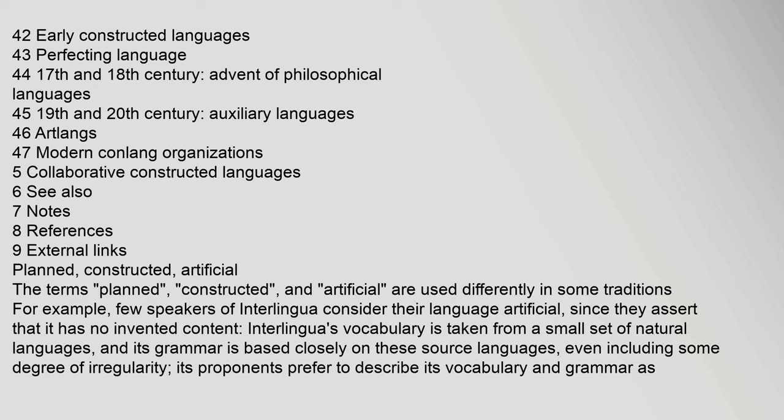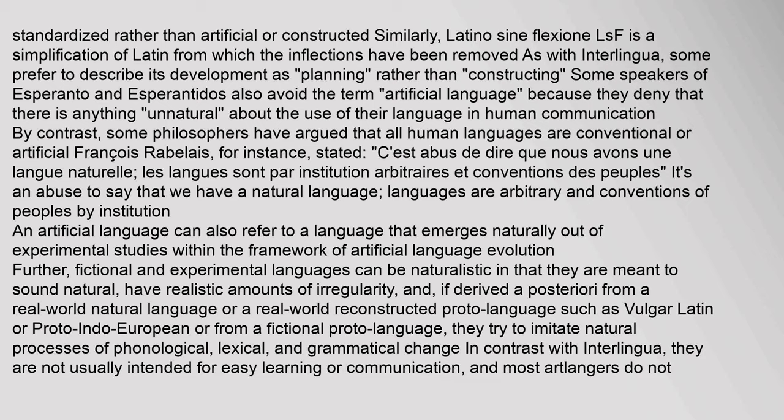The terms 'planned,' 'constructed,' and 'artificial' are used differently in some traditions. For example, few speakers of Interlingua consider their language artificial, since they assert it has no invented content. Interlingua's vocabulary is taken from a small set of natural languages and its grammar is based closely on these source languages, even including some degree of irregularity. Its proponents prefer to describe its vocabulary and grammar as 'standardized' rather than artificial or constructed. Similarly, Latino sine flexione (LSF) is a simplification of Latin from which inflections have been removed; some prefer to describe its development as planning rather than constructing.